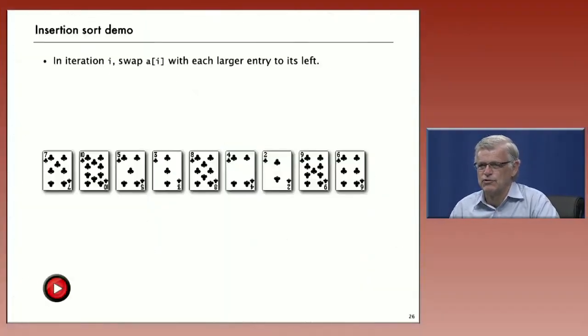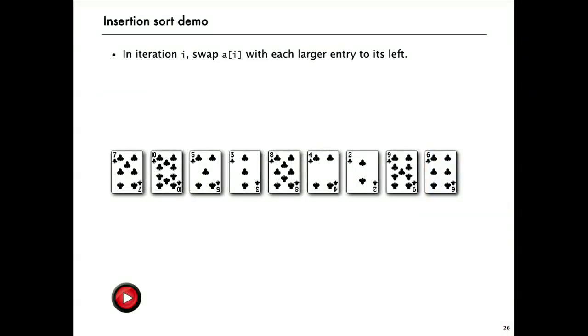Let's look at a demo of insertion sort. For insertion sort, what we're going to do is we'll move an index i from left to right as before, but now in the i-th iteration, we're going to move a i into position among the elements to its left. Let's look at how that works on our example with cards.